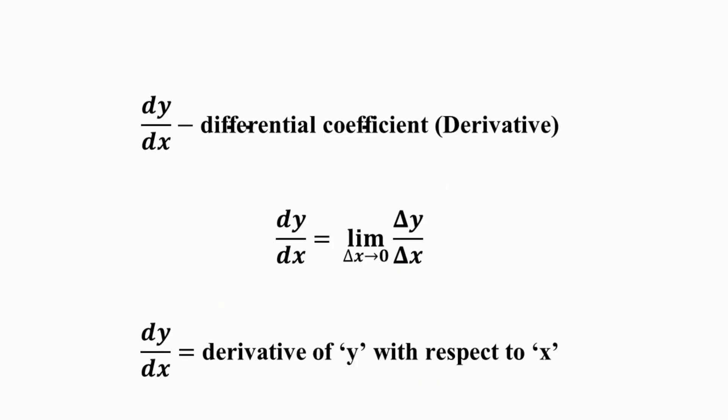The value of incremental ratio when change in x is very small is called differential coefficient or the derivative of y with respect to x, which is denoted by dy/dx. That is dy/dx which is equal to limit Δy divided by Δx where Δx approaches to 0. So dy/dx implies that the derivative of y with respect to x.